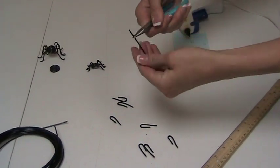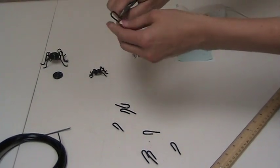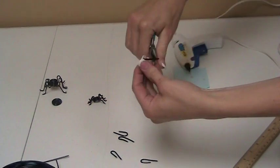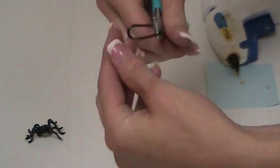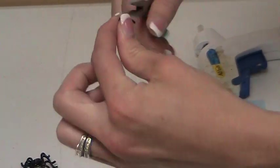Once you have all eight of them bent, then you're going to take the short side and bend it up. That's going to be the part that's gluing under the spider. Then a little part on the long, a little bend on the long part like this, which is going to be the foot of the spider.